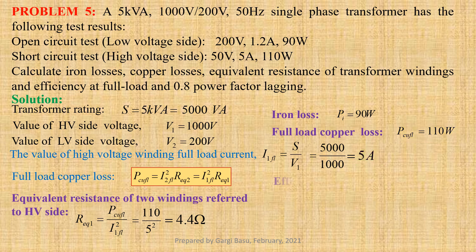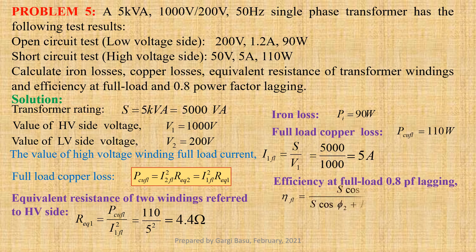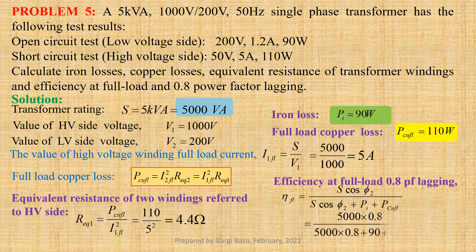Now let us calculate the efficiency at full load and 0.8 lagging power factor. ETA_FL equals to S cos phi 2 divided by S cos phi 2 plus P_I plus P_copper_FL, putting values we get 5000 into 0.8 divided by 5000 into 0.8 plus 90 plus 110, that gives us 95.2381 percent.